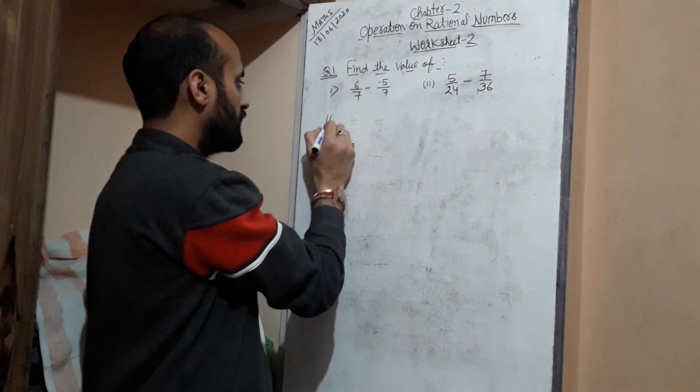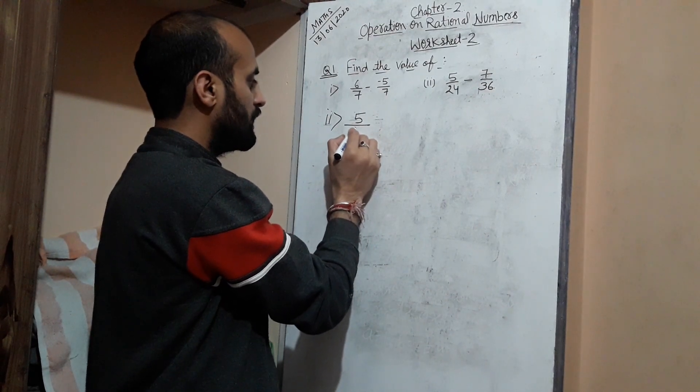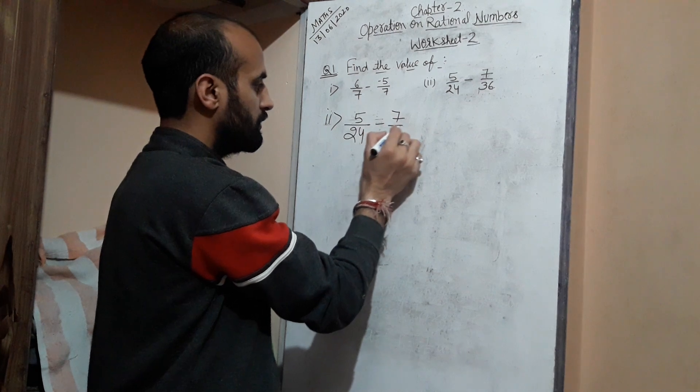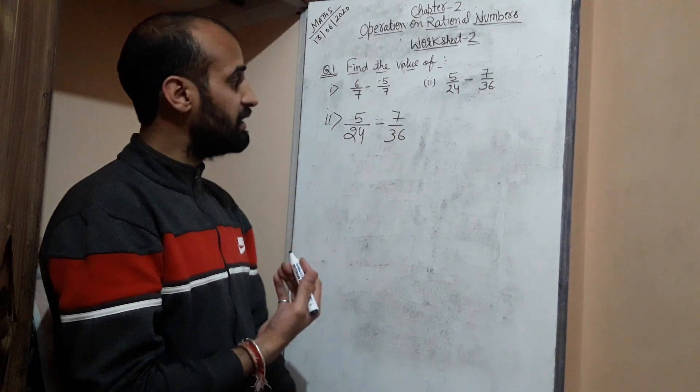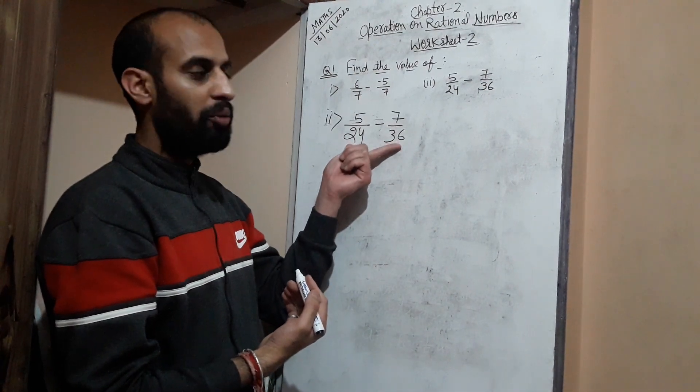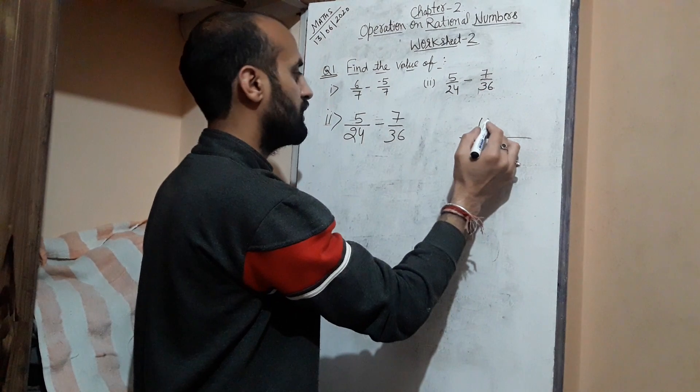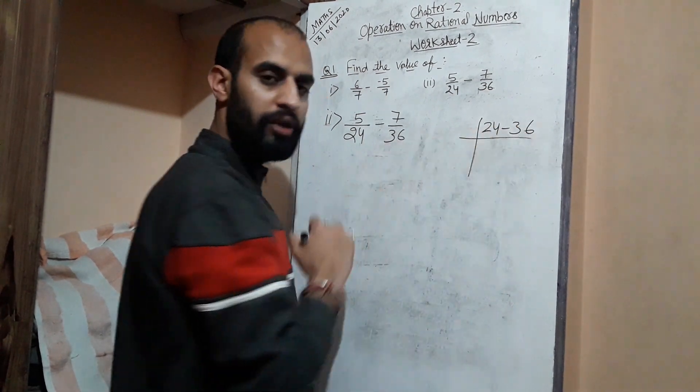Let's take your second case. The second one is, once again, we need to find out subtraction: 7/36. In this case you can see, my students, here denominators are different. So your first task, as I told you, you need to take LCM.